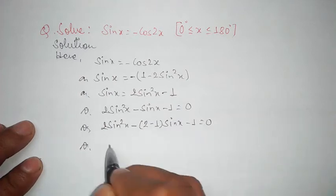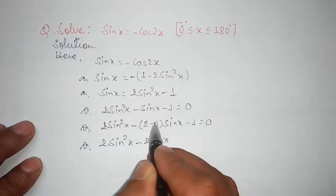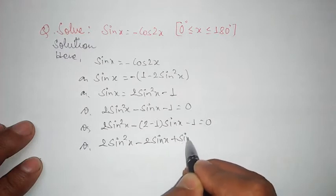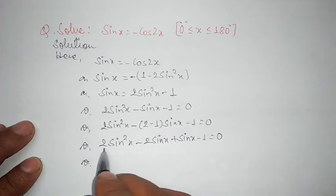So 2 sin square x minus 2 sin x plus sin x minus 1 equals 0. See what is common in the first term and second term.